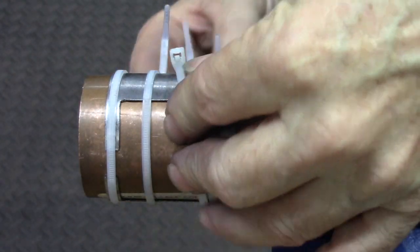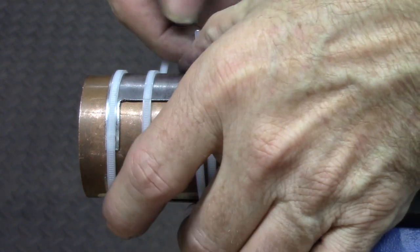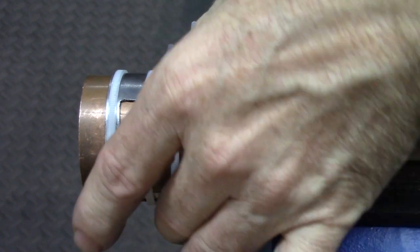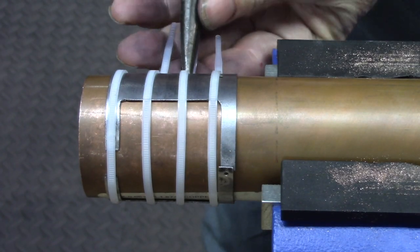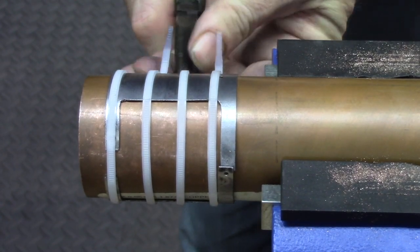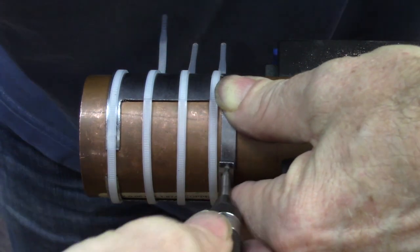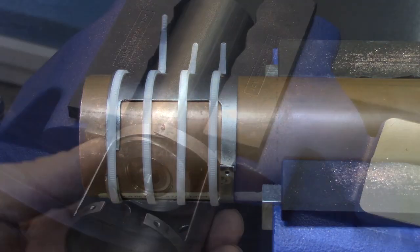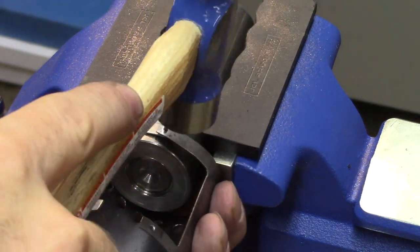The firebox lower arms need to be riveted together. To keep the firebox shape tightly conformed to the boiler, cable ties are used to pull it tight onto the copper tubing. Then the position of the rivet holes is punched, and the two lower firebox arms are joined with a copper rivet.